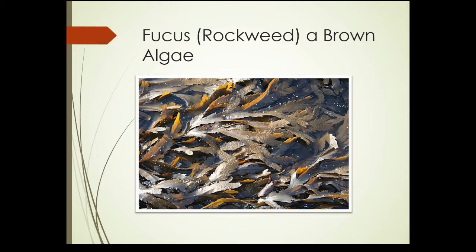Fucus, or rockweed, is another brown algae and has maybe even more similarity to land plants. The blades start having crenellations or indentations — toothing on the edge — like many land plant leaves have. The overall structure has that land plant look.